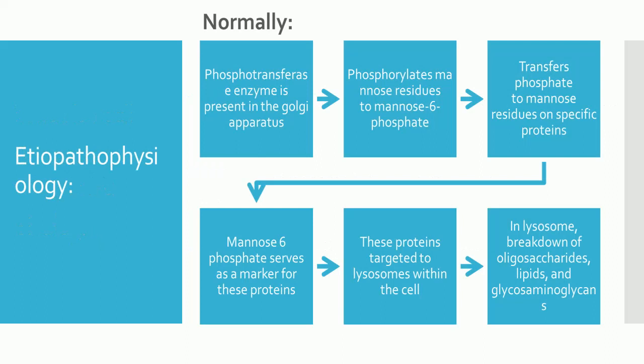Its pathophysiology: Normally, phosphotransferase enzyme is present in the Golgi apparatus and it phosphorylates mannose residues to mannose-6-phosphate, by which it transfers phosphate to mannose residues on specific proteins. Mannose-6-phosphate serves as a marker for these proteins to be targeted to lysosomes within the cell.